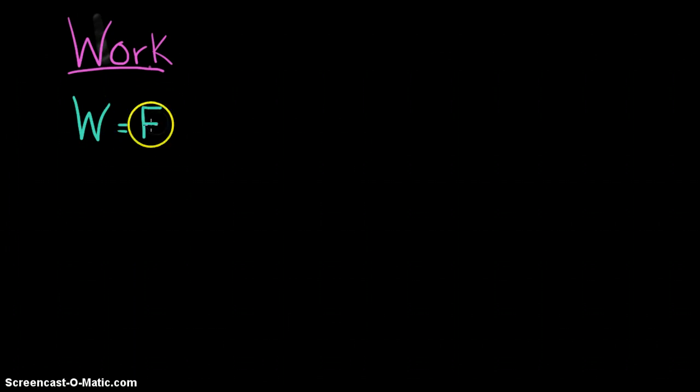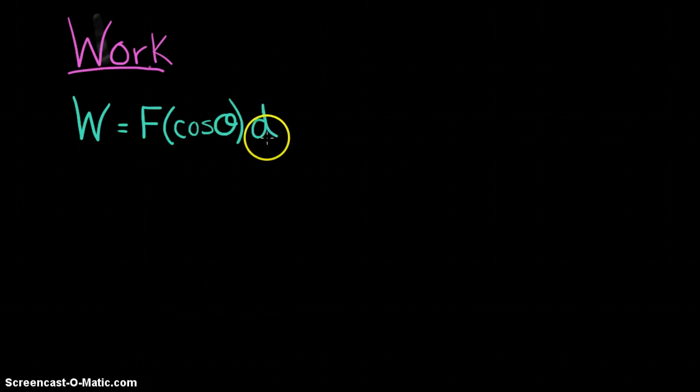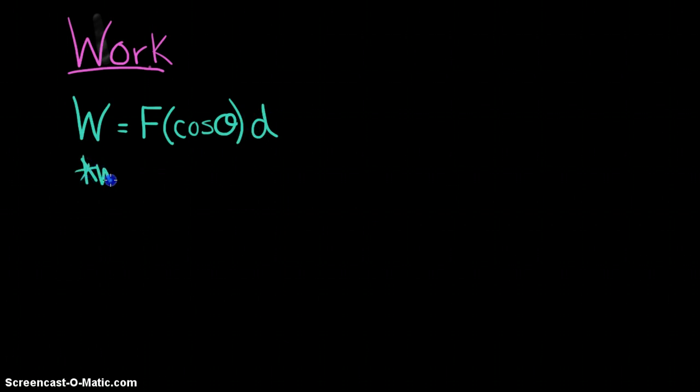Work has the symbol W, and the formula includes a force exerted on an object over a displacement. The three quantities we consider when calculating work are force, cosine of a specific angle, and the magnitude of the displacement of the object.